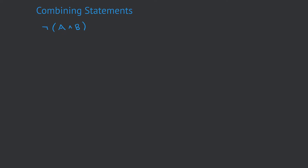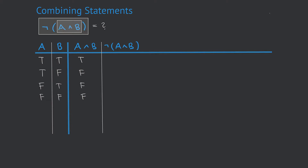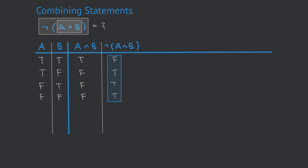Let's say we want to evaluate the following combined statement: the negation of A and B. To understand that statement thoroughly, we need to know which truth values it takes for the different combinations of A and B. We start with the different combinations for A and B, then evaluate components step by step. We first evaluate A and B, which gives true, false, false, false. Next, we negate A and B — simply inverting that column — which gives our final result. So our complex statement is thoroughly defined by this vector of truth values.